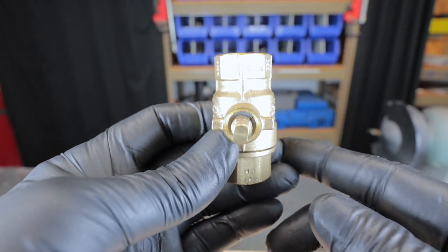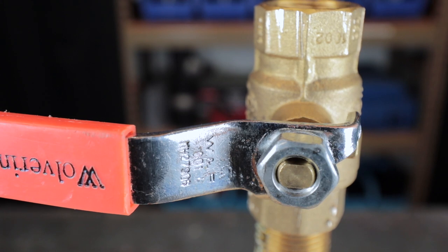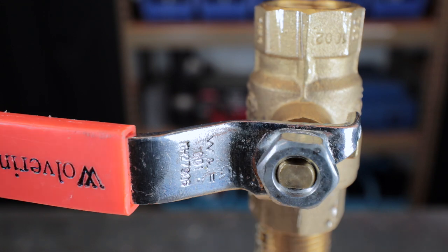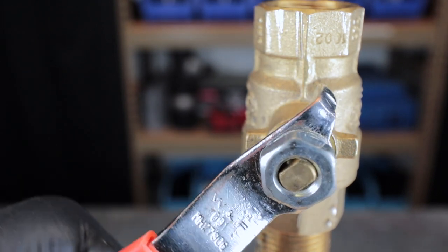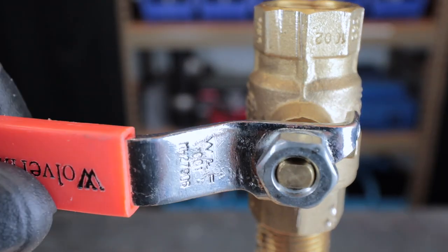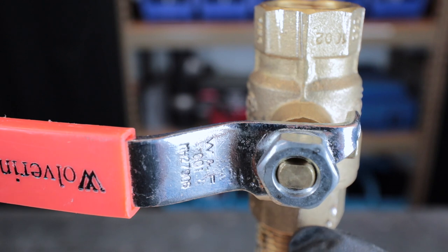Generally a shutoff valve is basically sitting there for service and sometimes it sits there for years and years. The first person who comes along and touches it, whether it be a ball valve or gate valve, you go to shut it off because you have to service something. As soon as you start turning the thing, you're going to see water start dripping out from the packing gland and then people start to freak out. There's nothing to get nervous about.